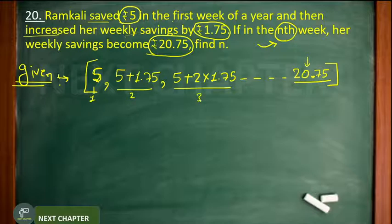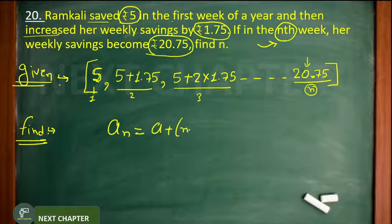This is for the first week, this is for the second week, this is for the third week, and this is the nth week. Which week, meaning you have to find the value of n. How will we find it? Which formula will apply here? An equals a plus n minus 1 into d.